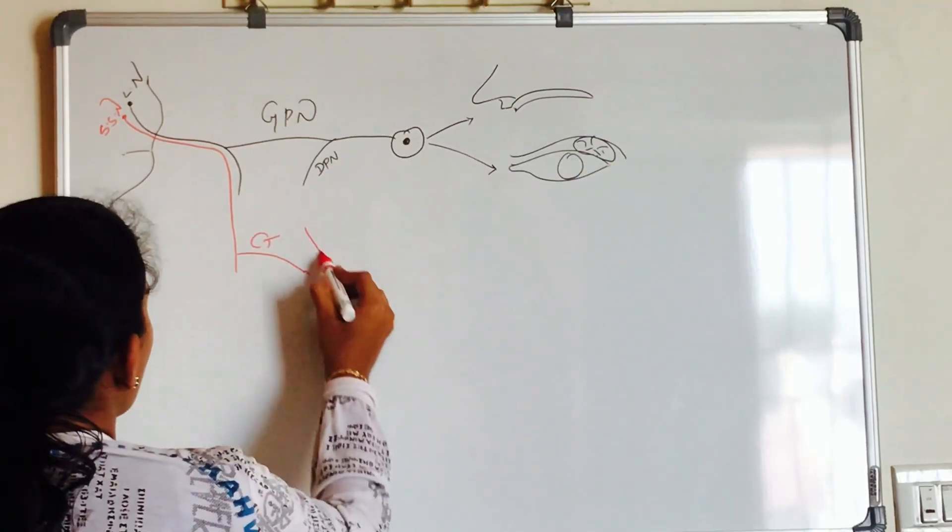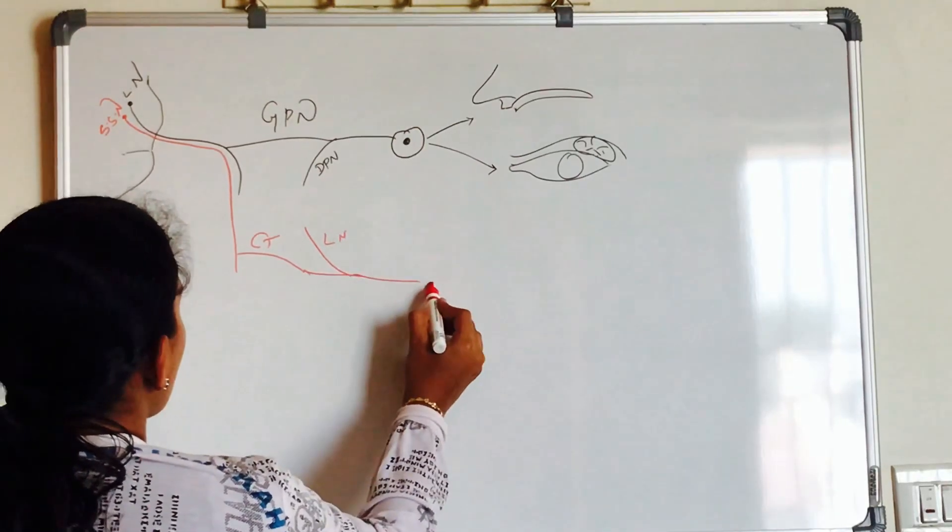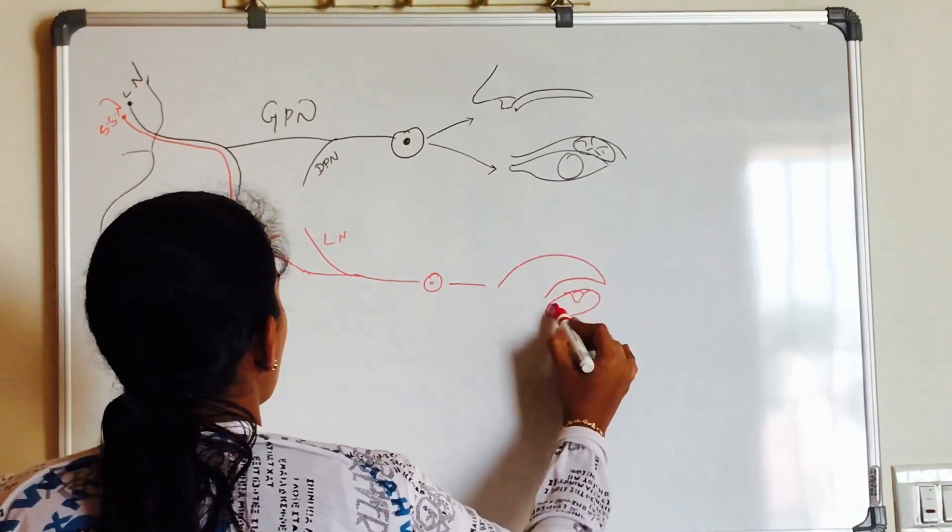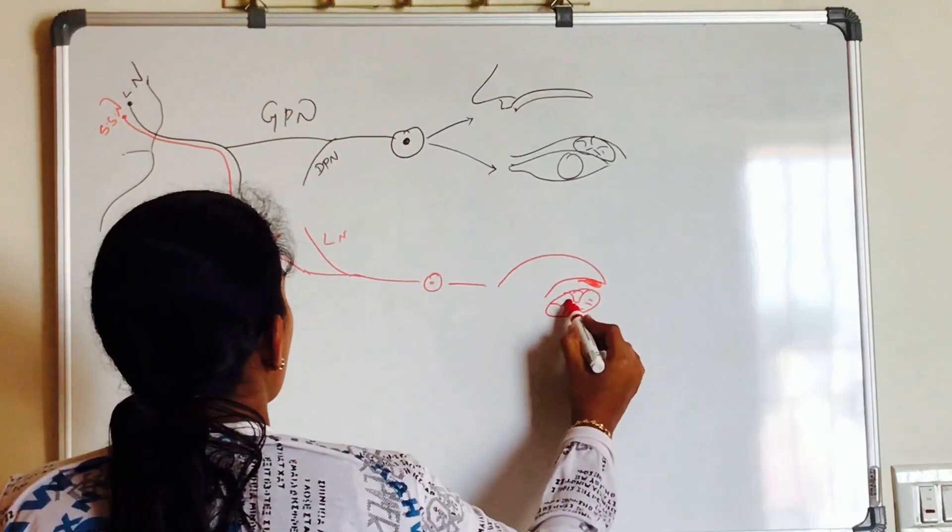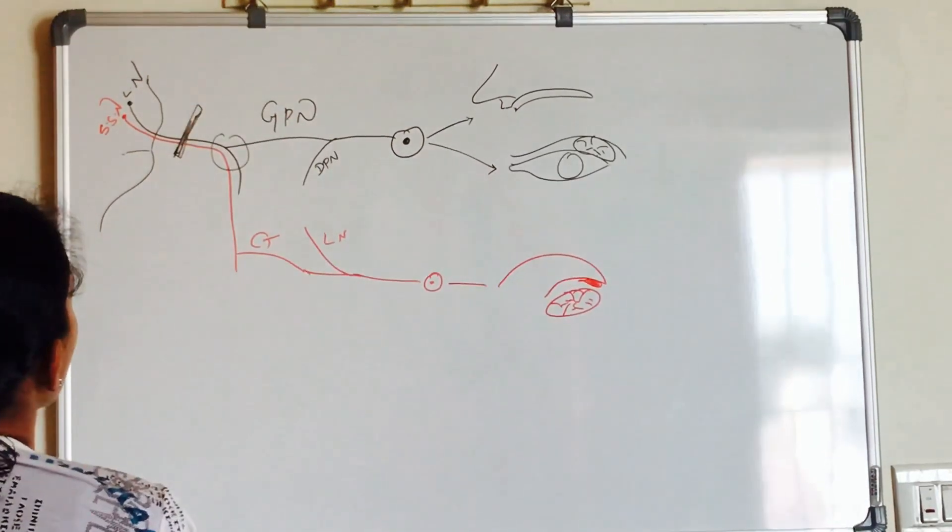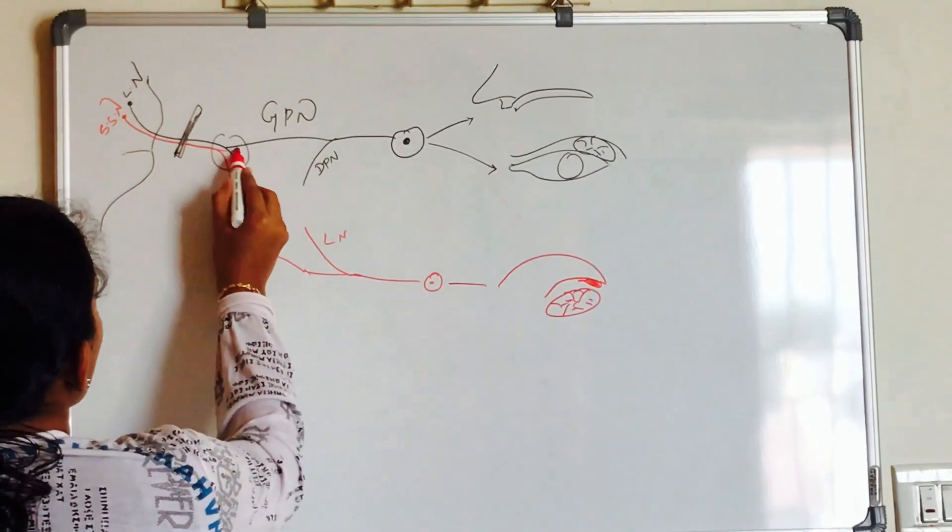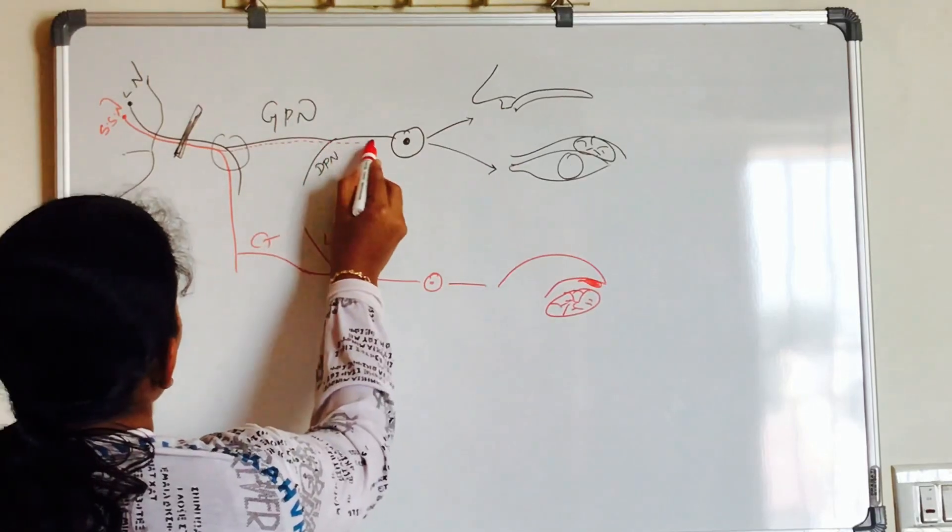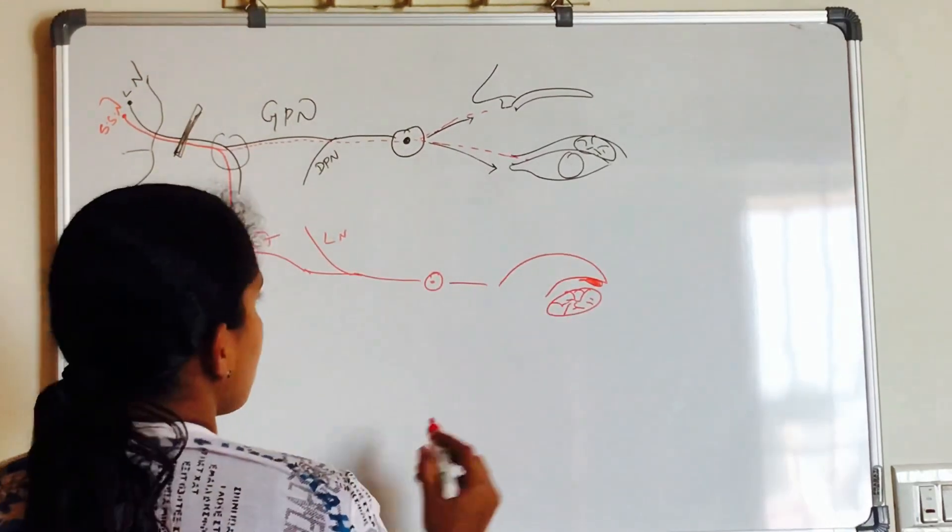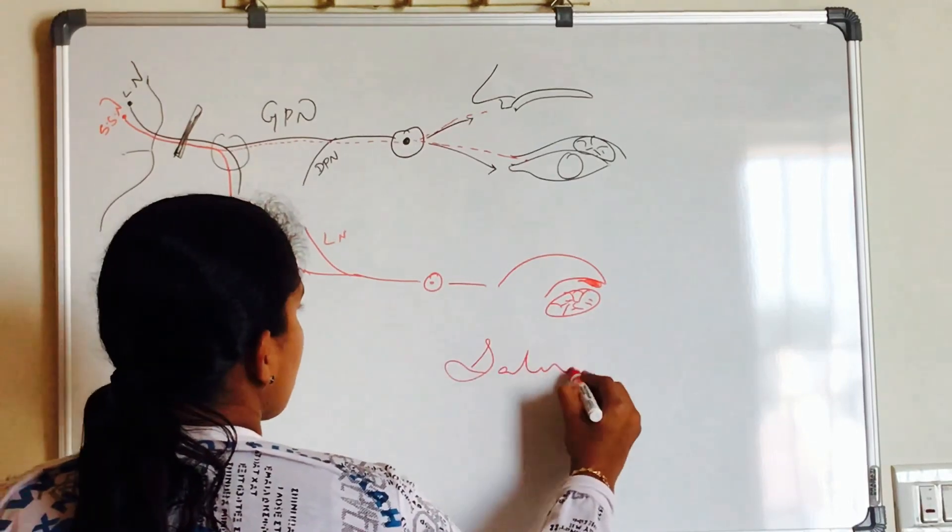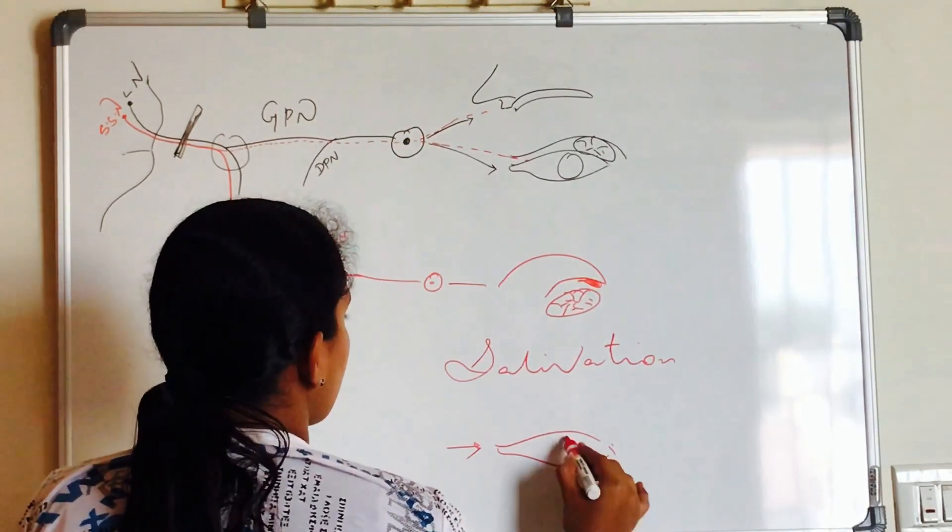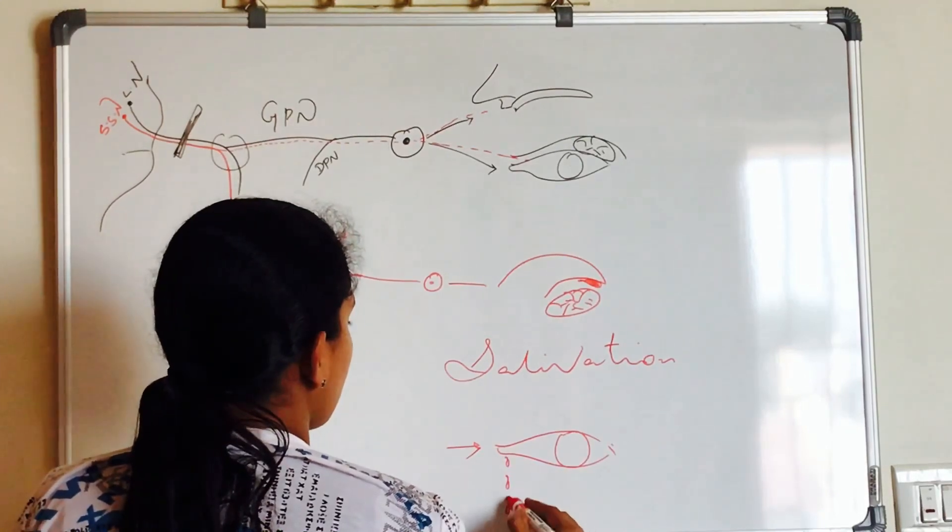Now the salivatory fibers, we have chorda tympani branch, joins with the lingual nerve which relays in the submandibular ganglion to supply submandibular and sublingual salivary glands. Suppose if you have lesion proximal to the geniculate ganglion and later when the fibers regenerate, the salivatory fibers join with your greater petrosal nerve and supply the lacrimal glands. So when we eat during salivation, we also lacrimation and this is called Crocodile Tears Syndrome.